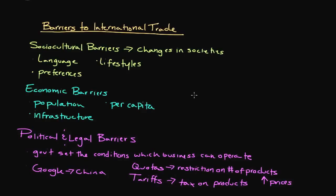Another thing government can do are what we call subsidies, commonly referred to as a reverse tax. It's basically a payment made by government to help certain domestic businesses compete with foreign firms. This certainly happened during the 80s — government has subsidized many industries, including the solar industry for a long period of time. It's essentially government's way of trying to level the playing field and assist its own domestic industries so they can compete internationally.